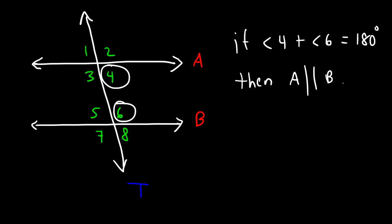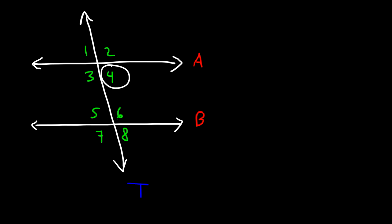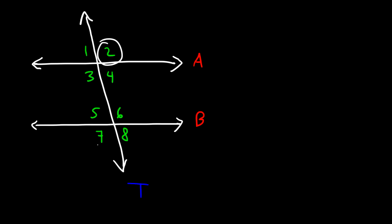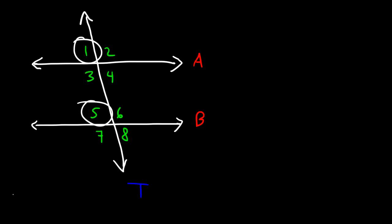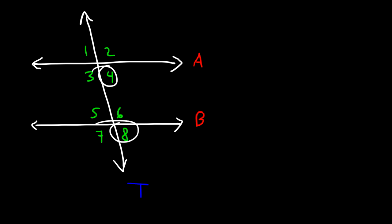So to summarize: if you have alternate interior angles such as 3 and 6, or 4 and 5, the two lines are parallel. If you have alternate exterior angles like 1 and 8, or 2 and 7, then A is parallel to B. If you have corresponding angles that are congruent, then the lines are parallel. Now let's work on an example problem.